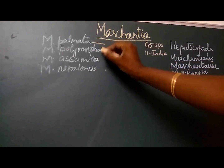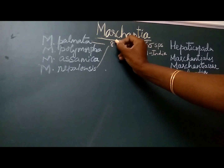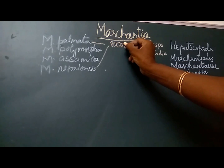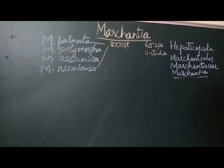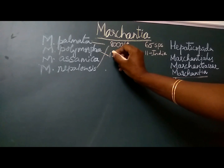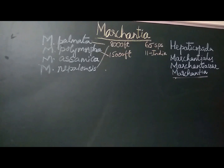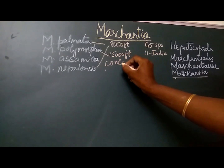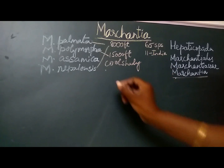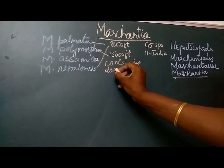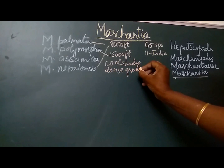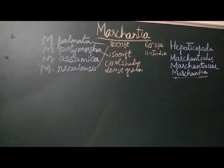Marchantia palmata and Marchantia nepalensis are seen growing at an altitude of 8000 feet, whereas Marchantia polymorpha grows at an altitude of 15000 feet. These plants grow in cool shady places and appear as dense green patches. They are also seen growing on bare rocks, damp soils, sides of streams, and old unmaintained walls.